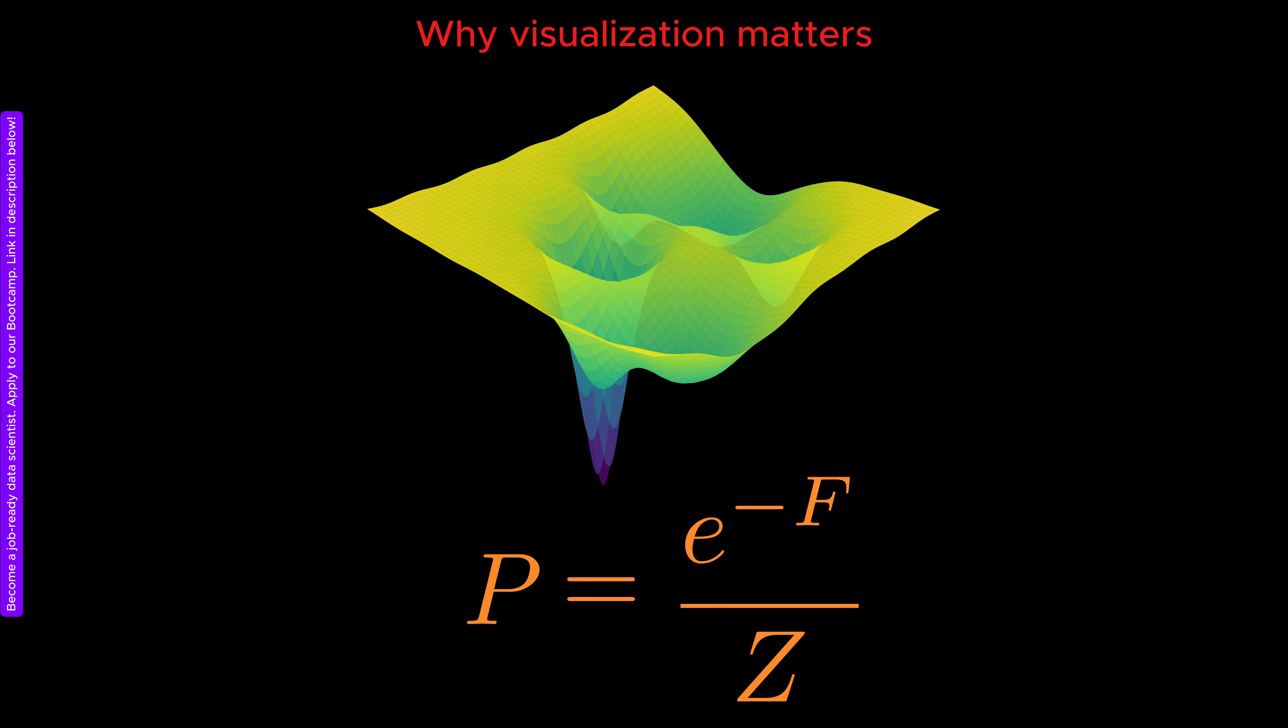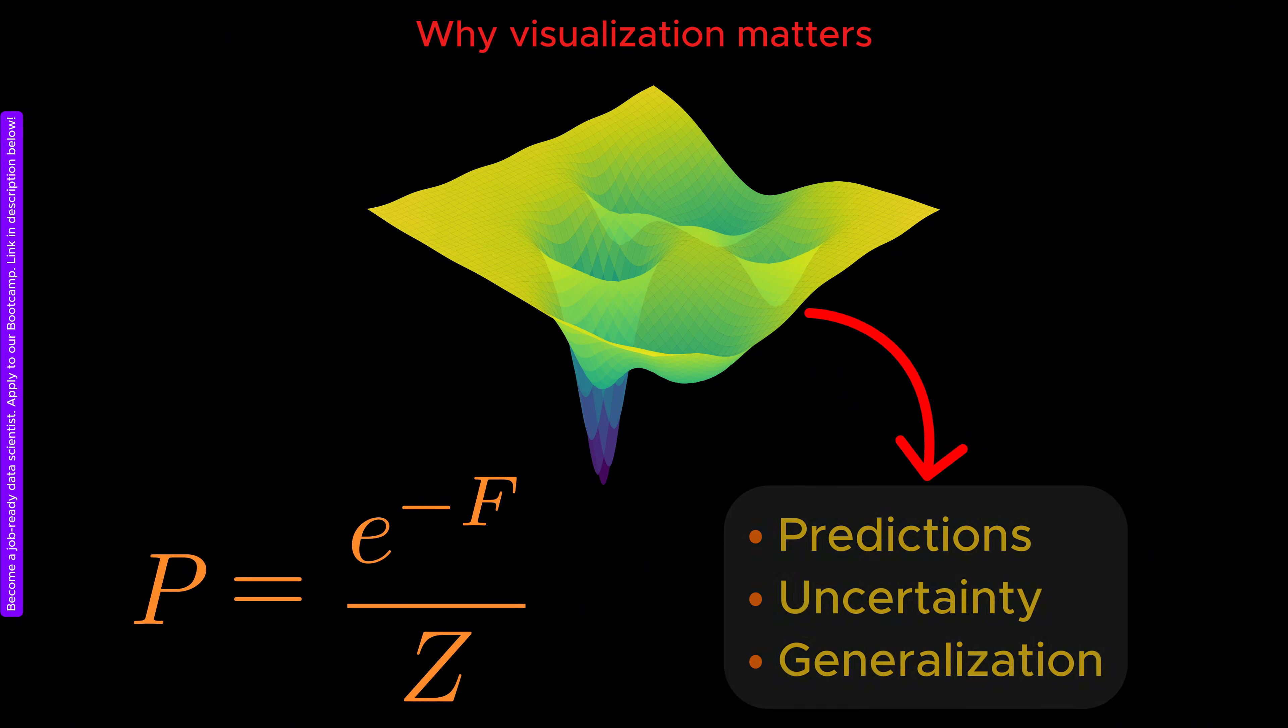In this expression, the free energy defines the landscape, and the normalization constant can be computed once the free energy is known. This means that if we know the free energy landscape, we essentially know everything about the model.